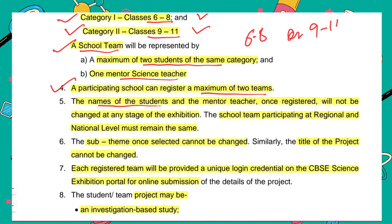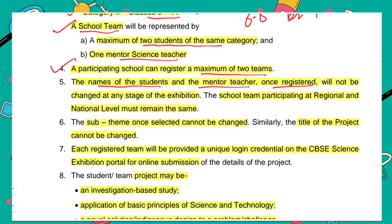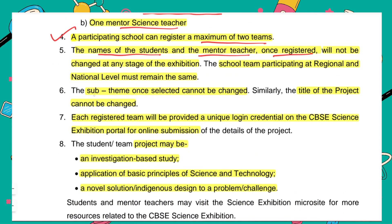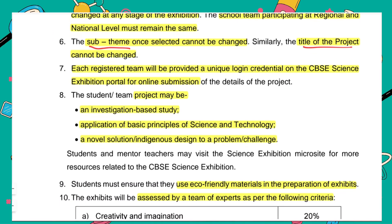Remember, the names of students as well as the mentor teacher, once registered, cannot be changed at any stage. So while registering, make sure you are selecting the sub-theme as well as the title of the project correctly, because you cannot change it afterward. After registration, all teams — each school has two teams — will get unique login credentials for the CBSE Science Exhibition Portal.